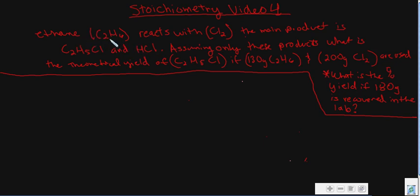Let's get started. This one says that ethane, which is C2H6, reacts with chlorine gas, which is Cl2. Remember, chlorine is one of those group sevens, it's always diatomic, meaning it always appears in doubles when it's by itself. The main product is C2H5Cl and HCl.